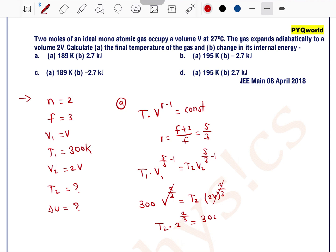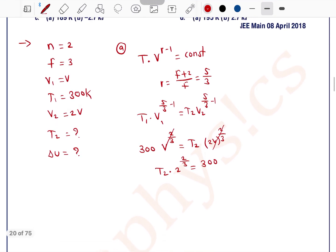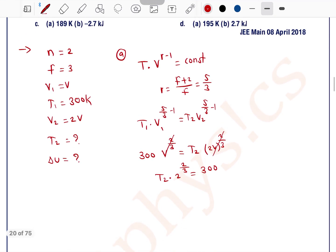Now how to solve for this? So T2 is equal to, see 2 square is 4, so cube root of 4, 1 by 3 is equal to 300. What is the cube root of 4? Approximately cube root of 4 is 1.5, so 1.5 is equal to 300.